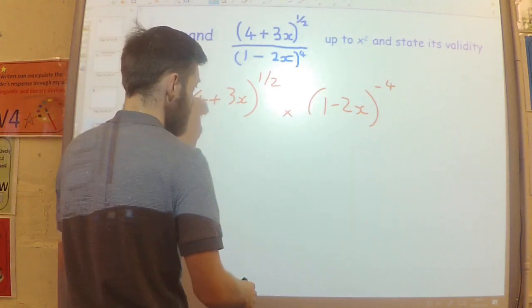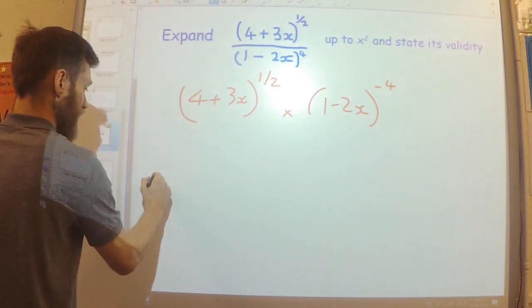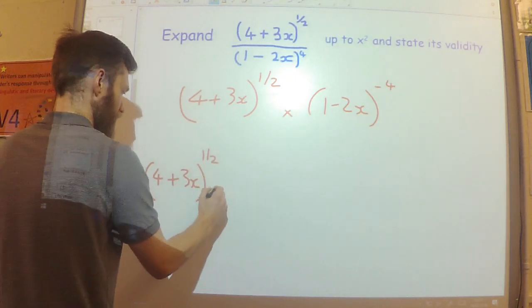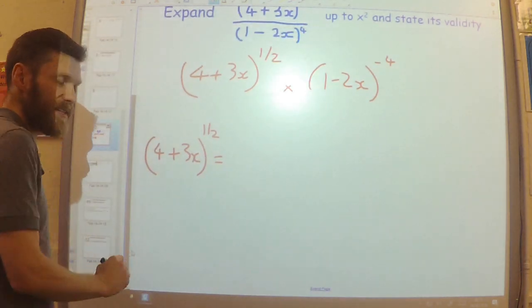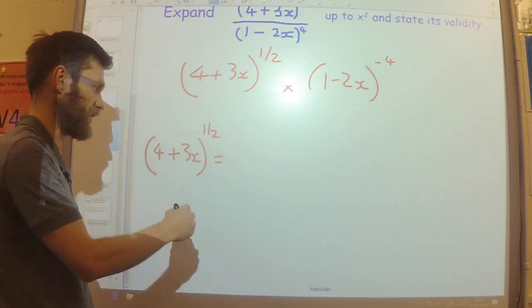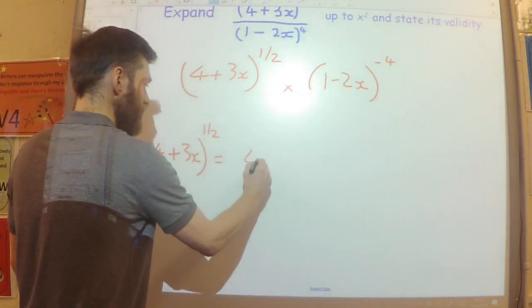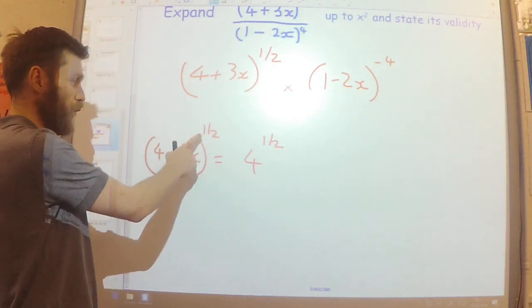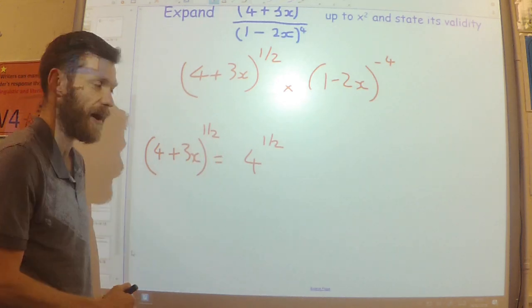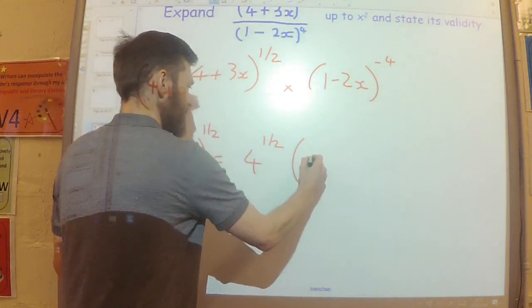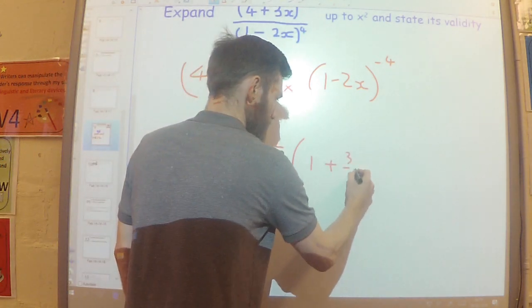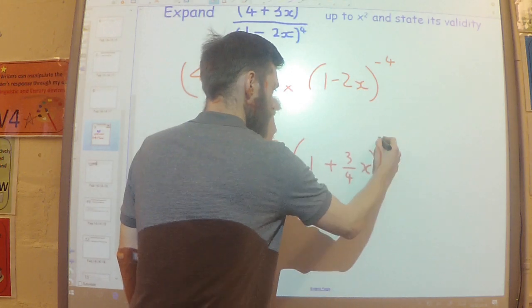So first of all, let's expand the 4 plus 3x to the power of half. Now, in order to expand this, the first thing I need to do, that needs to be 1, so I need to factorise the 4 outside. So to factorise the 4, remembering that you need to have that 4 to the power of 1 half. You can't just take the 4 outside, it has to be to the power. And on the inside, I will have 1 plus 3 quarters x, all to the power of 1 half.